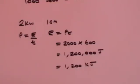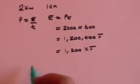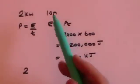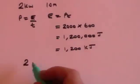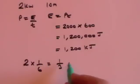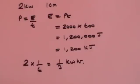By contrast if I do it in kilowatt hours then I've got two kilowatt hours multiplied by ten minutes well ten minutes is just a sixth of an hour so it's two times one over six which is one over three kilowatt hours it's a third of a kilowatt hour